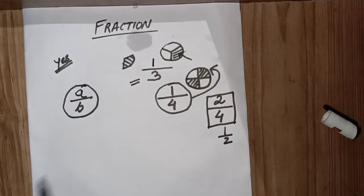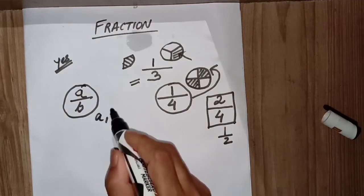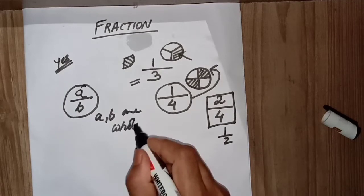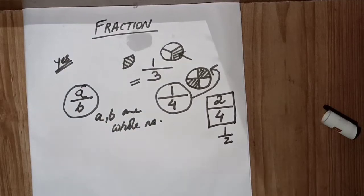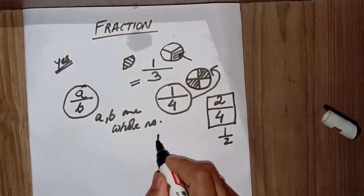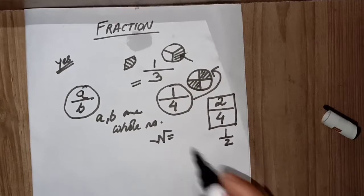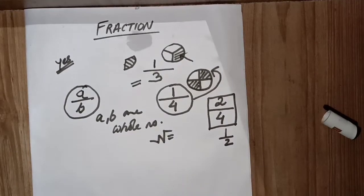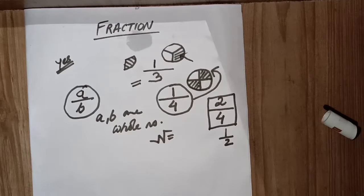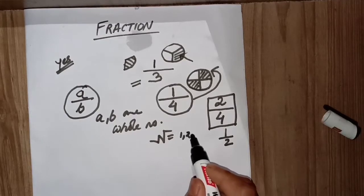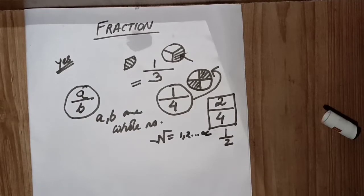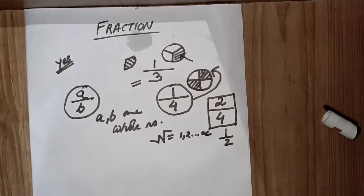There is a condition: a and b are whole numbers. Regarding number types — natural numbers, denoted by N, are those numbers which we use naturally for counting. For example, if there are ten bicycles, we count: one bicycle, two bicycle, three bicycle, and so on. Natural numbers start from one, two, and go up to positive infinity.